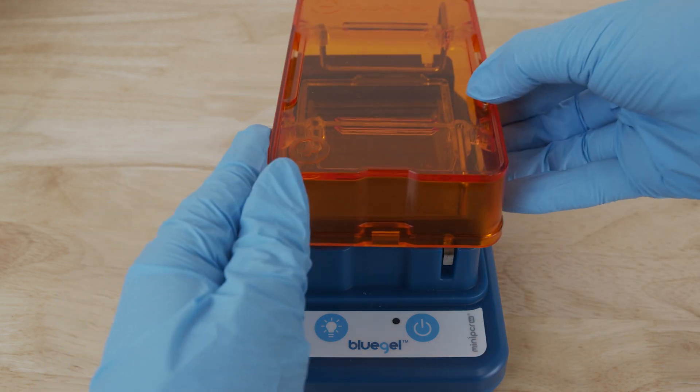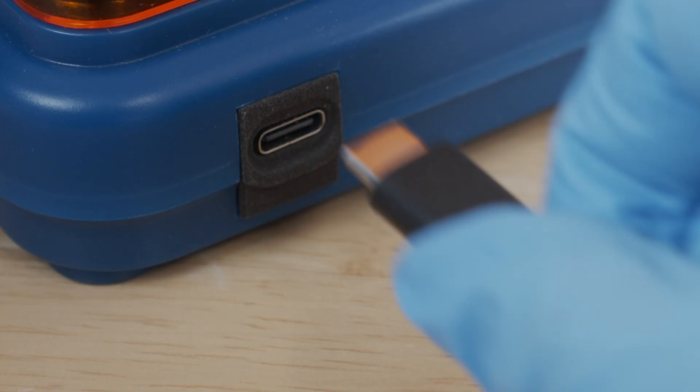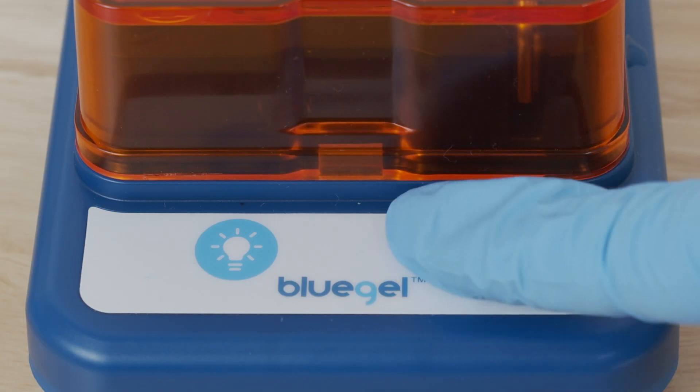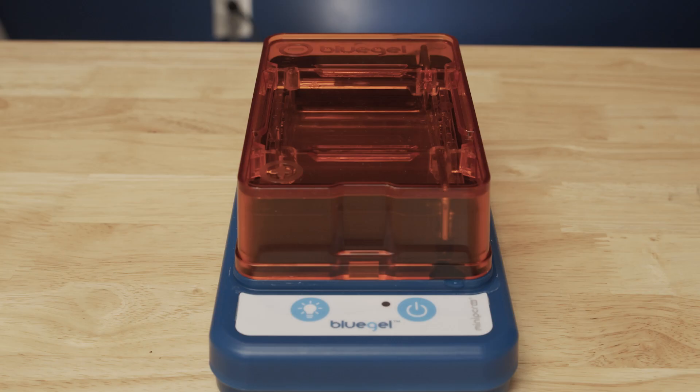To run a DNA gel, the system will only run with the cover closed. Place the orange cover on the blue base, connect to the provided power supply, and press the On button. A green light will indicate that the system is running. The Blue Gel System runs at a fixed voltage and can either be plugged into a standard outlet or run off of a portable battery.